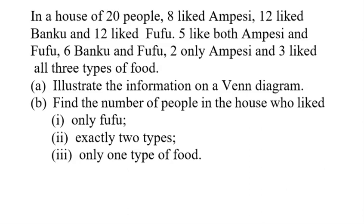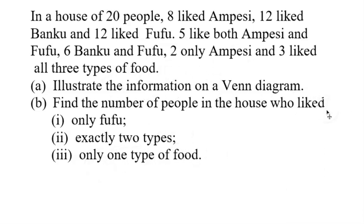Welcome to the channel. This is WASSCE 2022 for private students. In a house of 20 people, 8 like Ampesi, 12 like Banku, and 12 like Fufu. 5 like both Ampesi and Fufu, 6 like both Banku and Fufu, 2 like only Ampesi, and 3 like all three types of food. The first part requires us to illustrate the information on a Venn diagram, then find the number of people who like exactly two types and only one type of food.